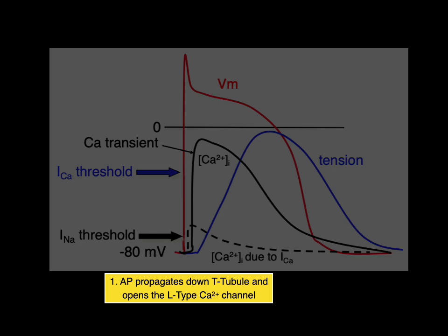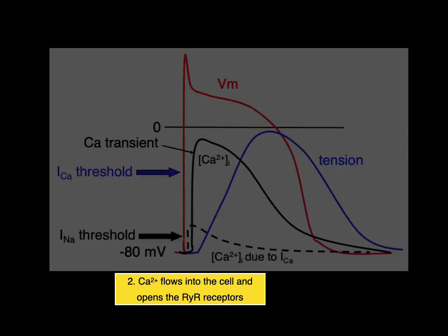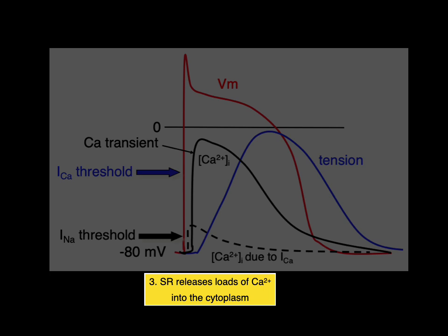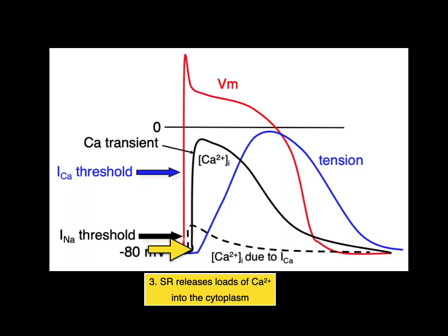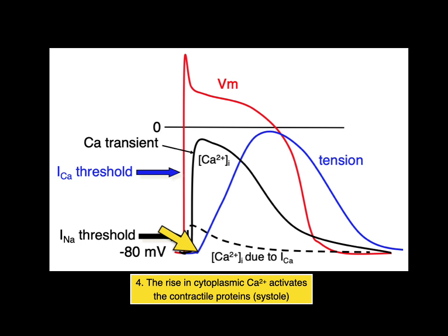So the action potential propagates down the T-tubule and opens up the L-type calcium channel. There's that upstroke. And during the upstroke at negative 40 millivolts, the L-type calcium channel slowly opens. And when it opens, calcium flows into the cell and opens the ryanodine receptors. That's the calcium that binds to ryanodine. When the ryanodine is open, the sarcoplasmic reticulum releases loads of calcium into the cytoplasm. There's that calcium transient. The rise in cytoplasmic calcium activates the contractile proteins, myosin and actin, and we get systole, the increase of tension of the muscle.